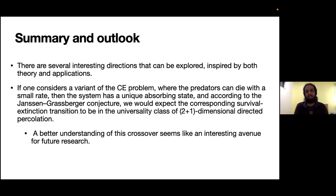This model is actually very underexplored and there are many interesting directions that people can pursue. But just one thing that I find very interesting is the following: if you consider the Chase-Escape problem where the predators can die with a small rate, then the system has a unique absorbing state because the predators are dying. Eventually all the predators are going to die and the absorbing state is going to be the empty lattice. If we consider this model, then this model actually satisfies the DP conjecture, and we would expect that the survival-extinction transition would now lie in the universality class of 2+1D directed percolation.